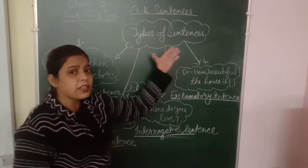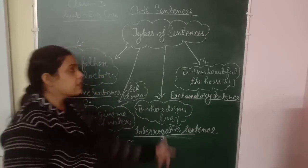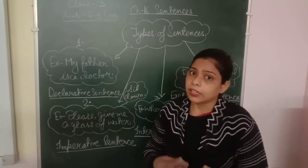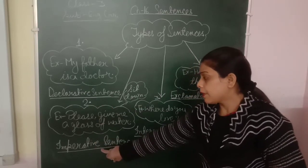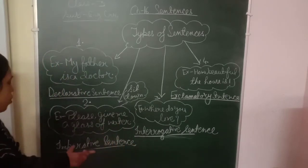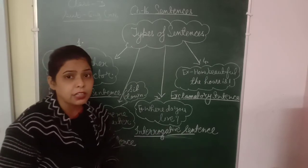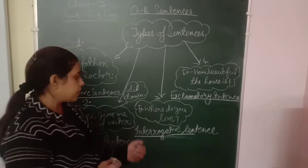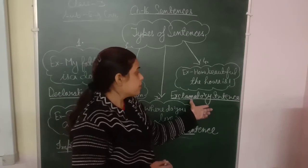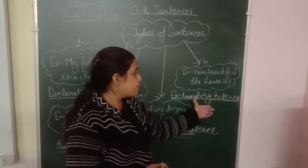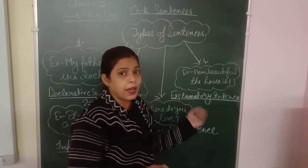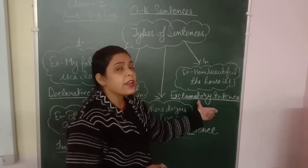So how many types of sentences are there? There are four types. First, declarative sentence — if a sentence makes a statement or declares something. Second, imperative sentence — if a sentence expresses a request or command. Third, interrogative sentence — if someone asks a question. Fourth, exclamatory sentence — if a sentence expresses any strong feelings like joy, sadness, or surprise.